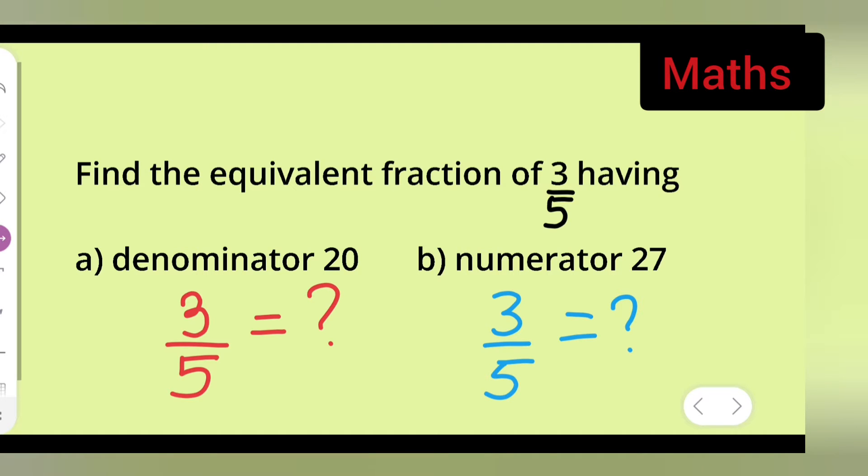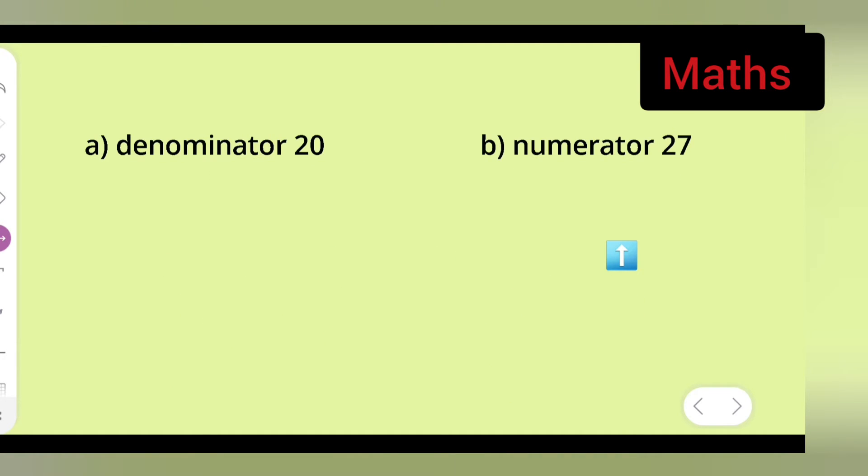First I will take down the first one with denominator 20. That is what I am going to write, 3 upon 5. Here what you're going to do, you want denominator to be 20.